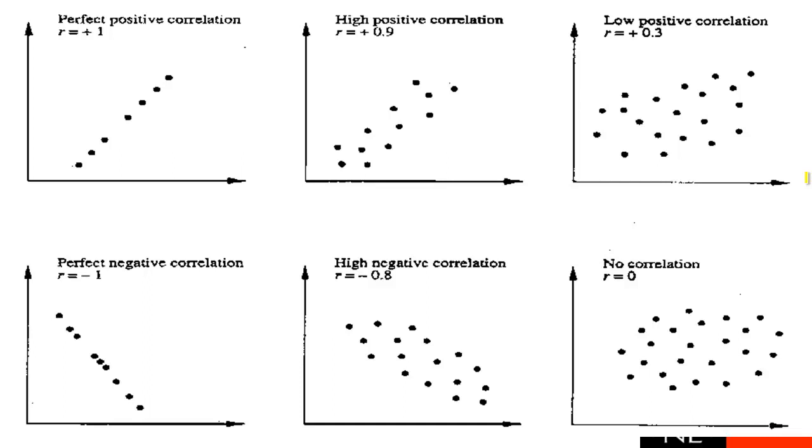The bottom left we've got perfect negative correlations. That's negative 1. And again points in a perfect straight line this time with a negative correlation. They slope downwards though. Centre bottom, we've got negative 0.8. So very clear negative relationship. We can definitely see a straight line there. But a little bit more spread in the points.